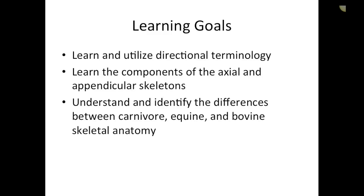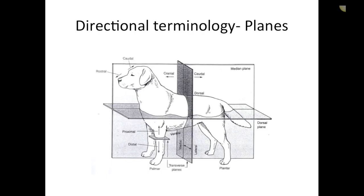Our learning goals for this area of the course are to learn and utilize directional terminology, learn the components of the axial and appendicular skeletons, understand and identify the differences between carnivore, equine, and bovine skeletal anatomy, and further to that, understanding the different joints and classifications of joints.